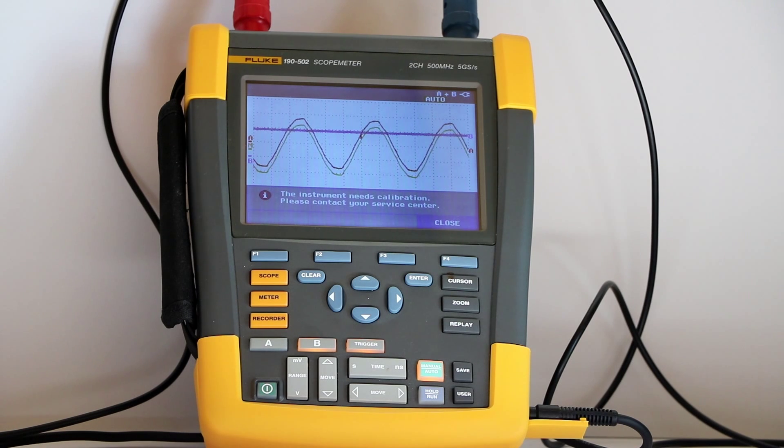The 190-502 model number reflects the fact that the instrument we are examining today has a 500 megahertz bandwidth and there are two oscilloscope analog input channels that accept BNC cable connections.